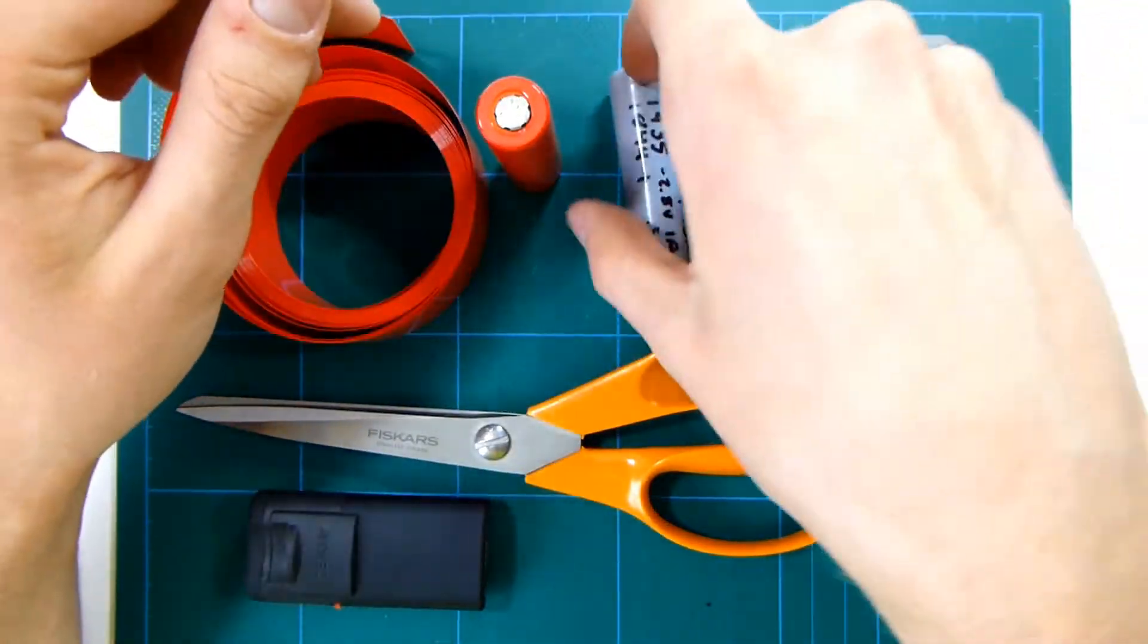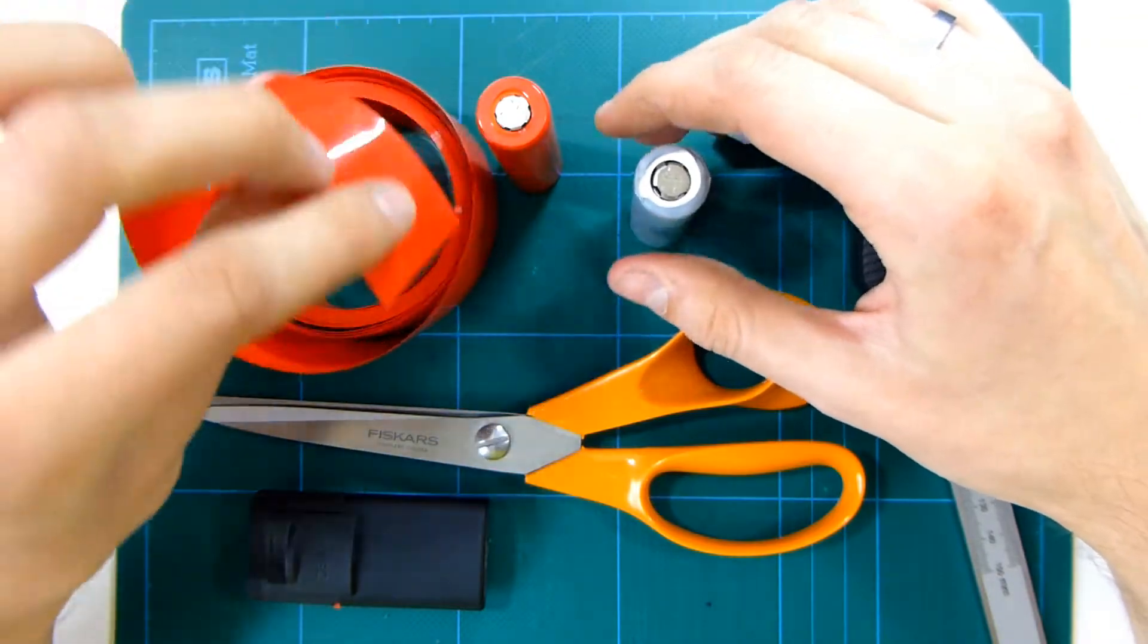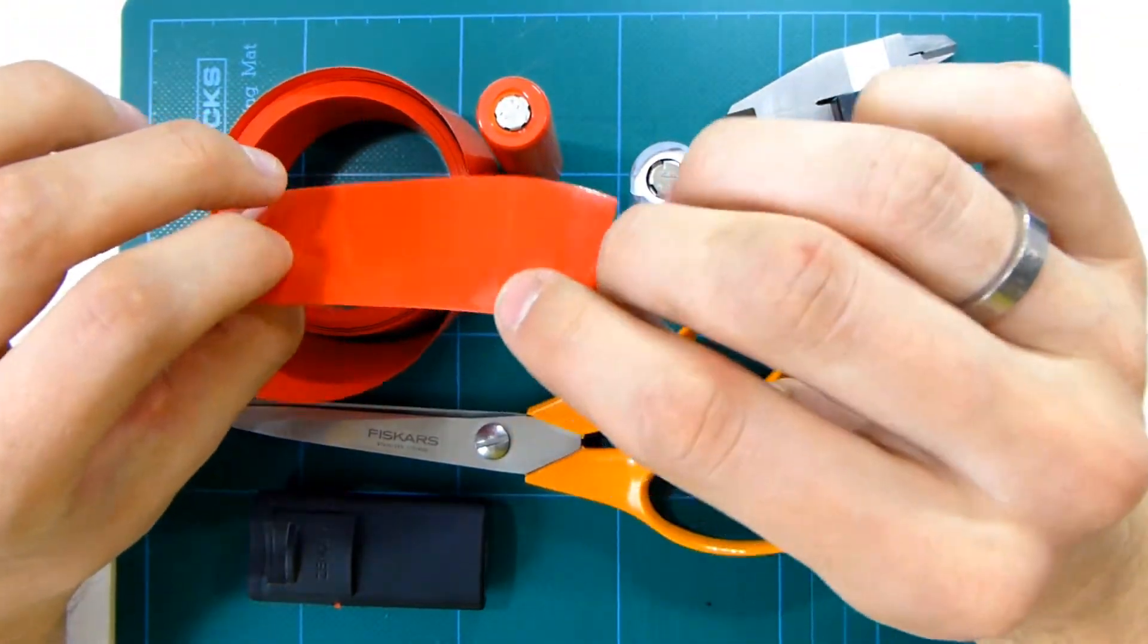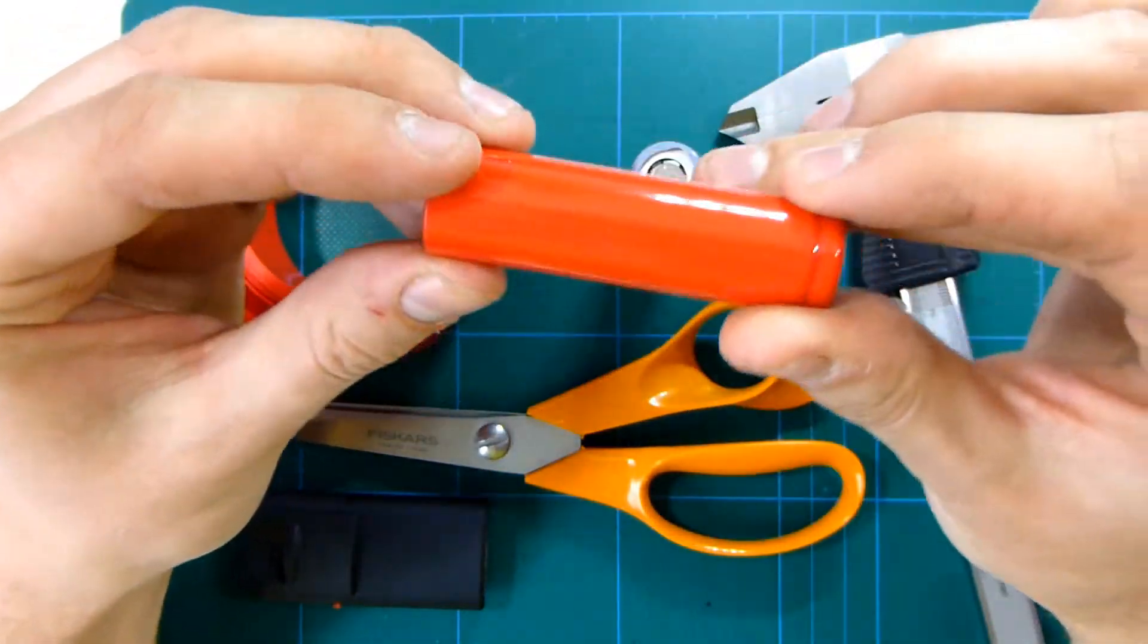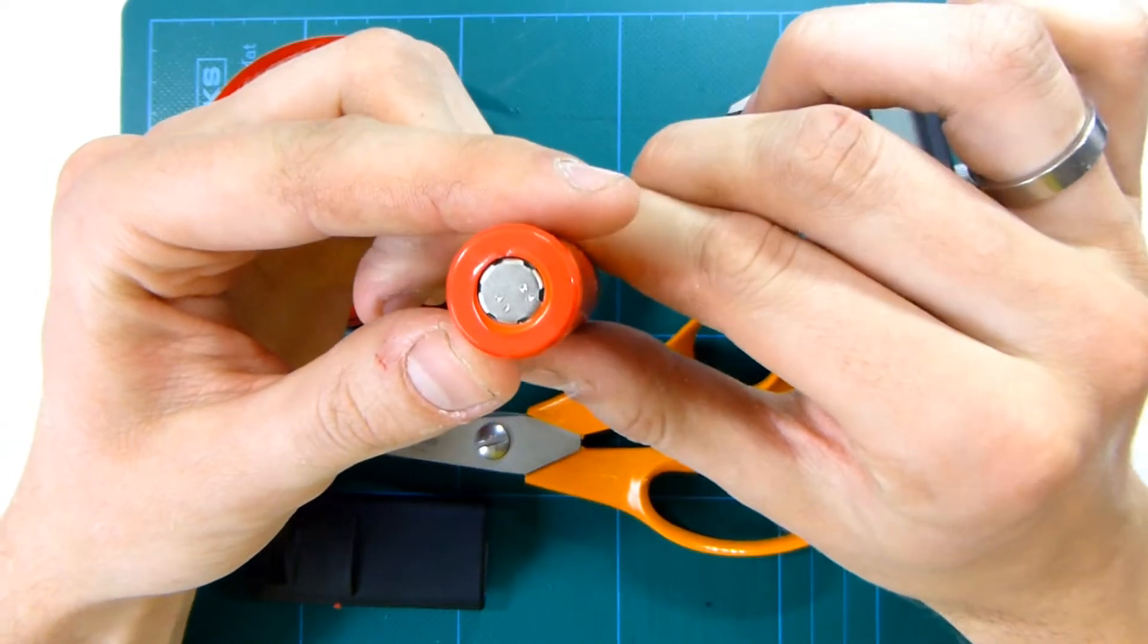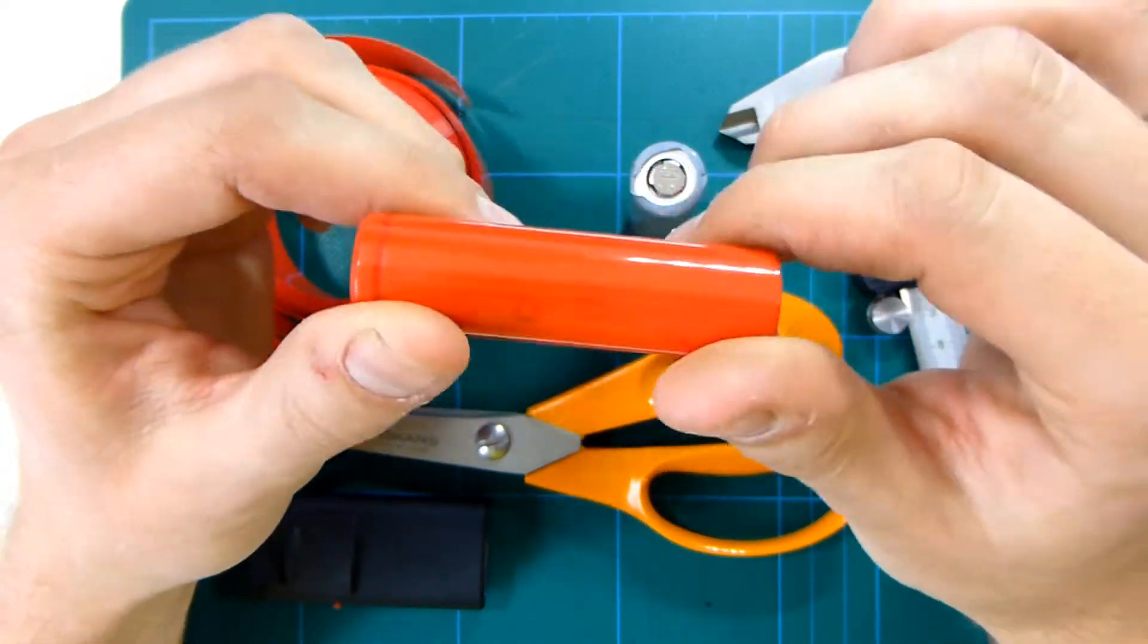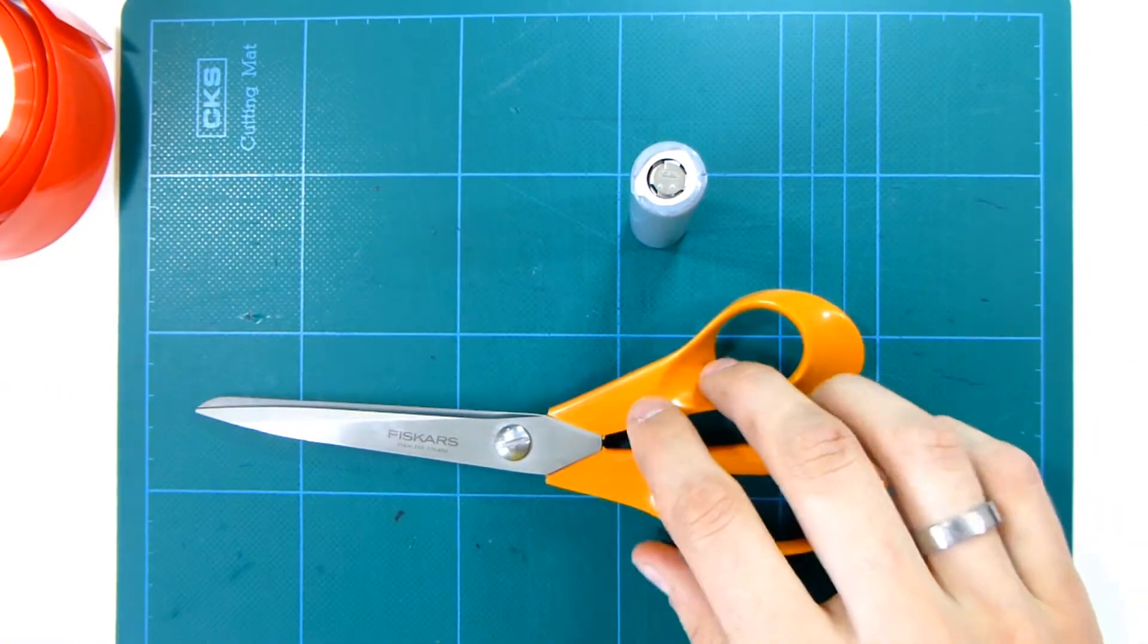So what we're gonna do is take the sleeving off this one, put this red sleeving which I picked up for about eight dollars or so on eBay - five meter strip - and turn it into something that looks quite like this.